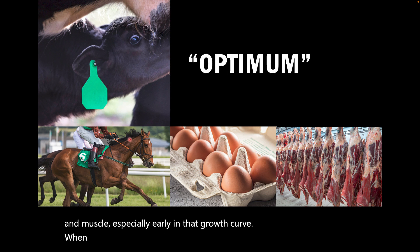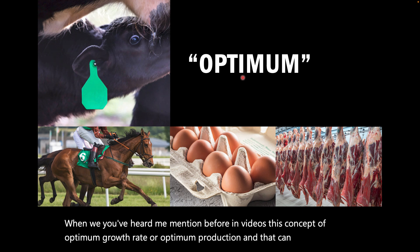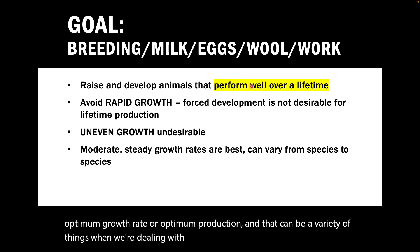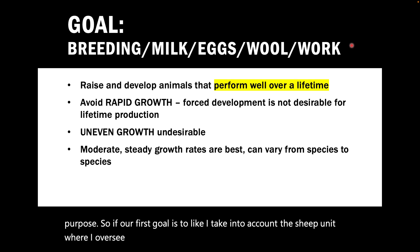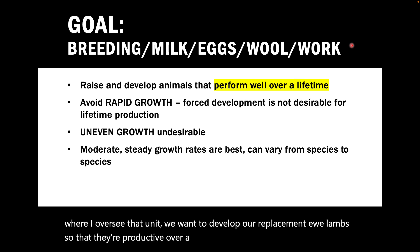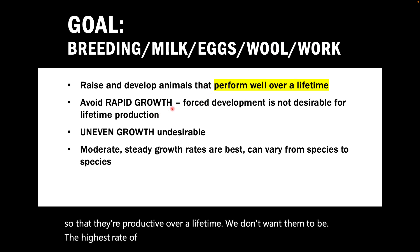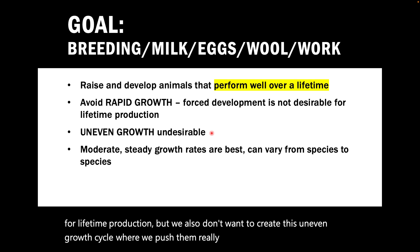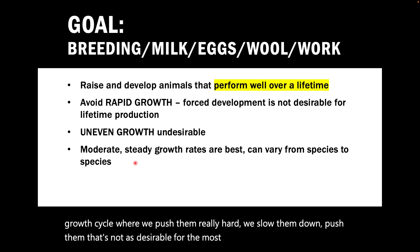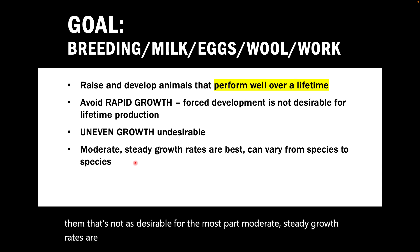When it comes to optimum growth rate or optimum production, we need to understand the animal's purpose. For example, in the sheep unit I oversee, we want to develop replacement ewe lambs so that they're productive over a lifetime. We don't want the highest rate of growth forcing their development — that's not desirable for lifetime production. We also don't want an uneven growth cycle of pushing hard then slowing down. For the most part, moderate, steady growth rates are best, but they can vary from species to species. In the cattle industries — both beef and dairy — heifers are developed at a very steady growth rate so they can perform best over a lifetime.